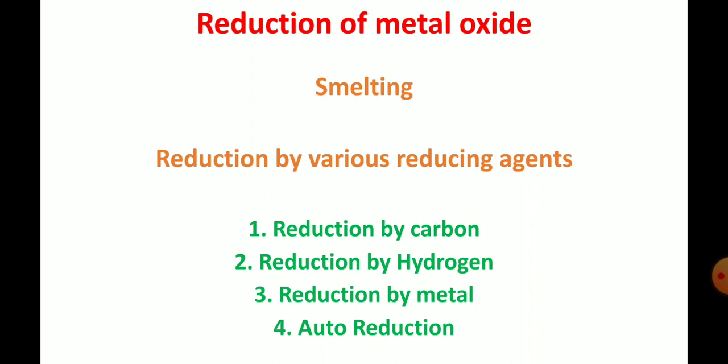Reduction of metal oxide and the techniques used for it — dear students, there are 2 techniques involved. Those 2 techniques are: one is smelting, and the other is reduction by various reducing agents. These 2 are the steps employed in the reduction of metal oxide to metal.